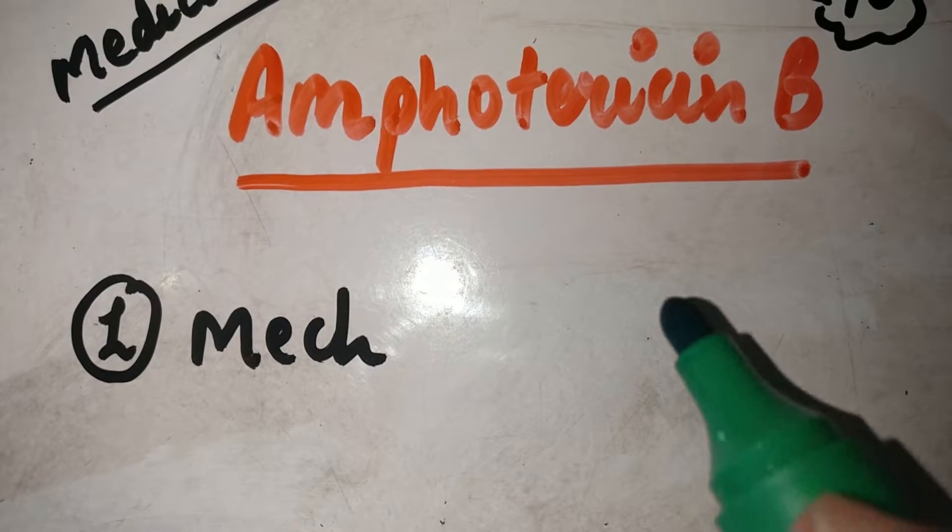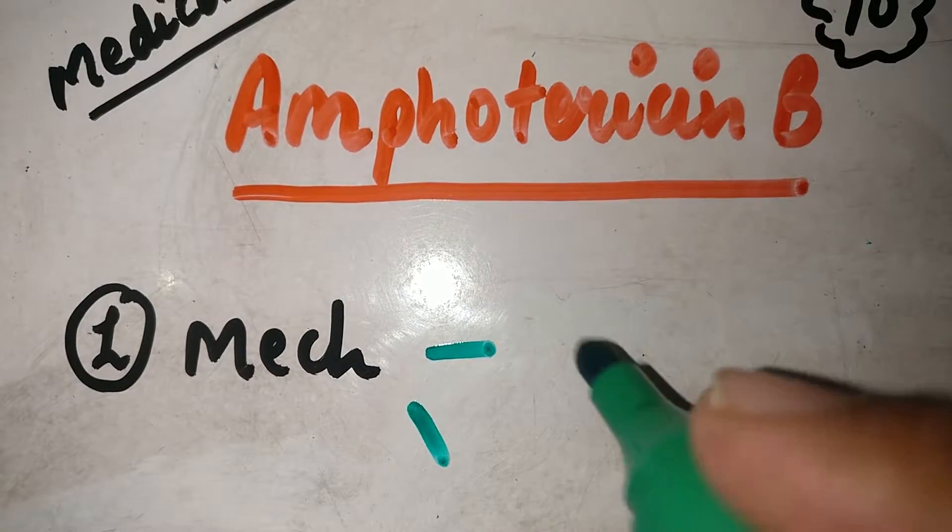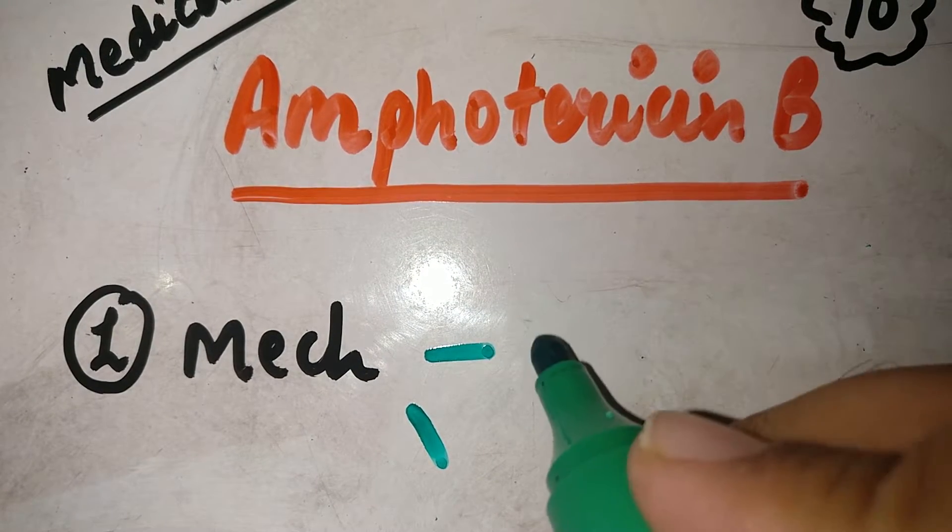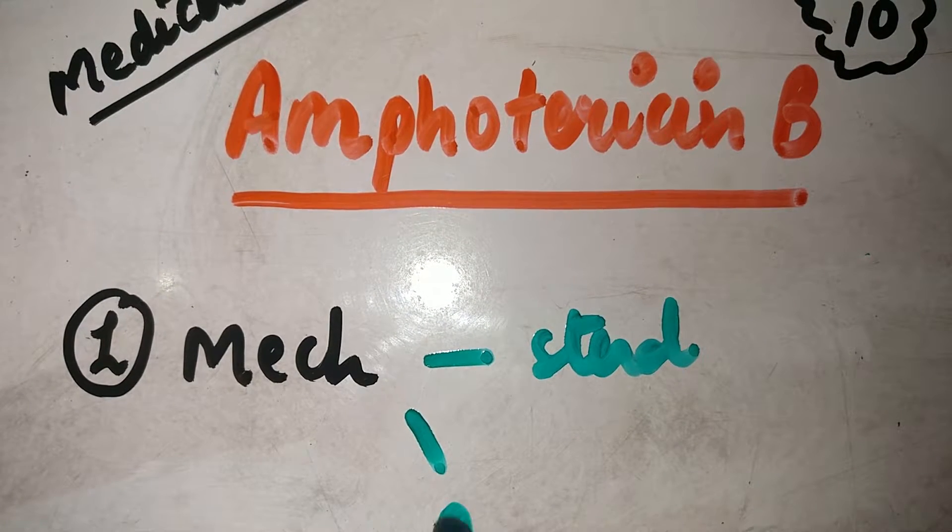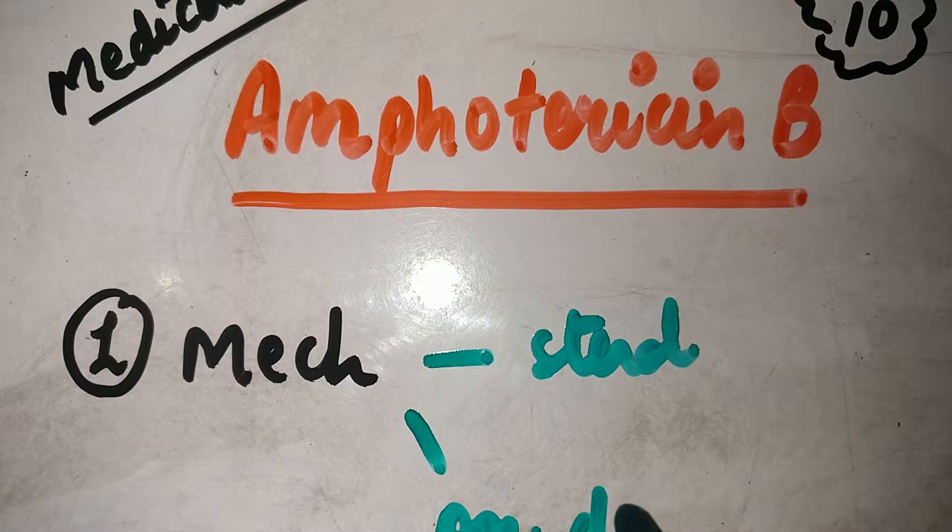The drug we've chosen for today is Amphotericin B and the first thing we'll be talking about is the mechanism of action which is twofold. One is it perforates the sterol membrane of the fungi and next is that it causes oxidative damage to the fungus.